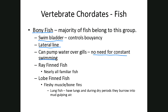Bony fish are broken up into two groups. Ray-finned fish include almost any fish you can think of — catfish, trout, perch, salmon, swordfish — this is the greatest number of fish. The lobed-finned fish are a couple of species where the fins are very fleshy with muscle and bone, giving them more structure in their fins than the ray-finned fish.